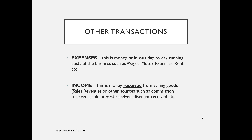Expenses are very distinct from assets. With an expense, think to yourself: have I got anything to show for it? If not, it's just a running cost — an overhead — classed as an expense. Income, on the other hand, is money that's been received and earned by the business. Usually the biggest source of income is sales revenue from goods or services. Other sources include commission received, bank interest received, and discount received. Anything with 'received' — past tense, ending in 'ED' — is going to be a source of income. Not to be confused with receivables, which are a type of asset — money owed to the business by its customers.